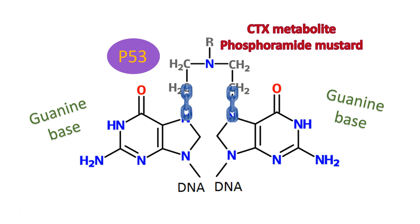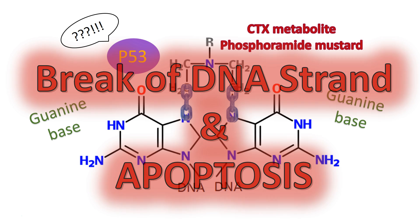Then along comes p53 — our tumor protein — which checks the DNA for transcription errors and anything that's not right. It will stop cellular reproduction, induce cell death, or induce DNA repair depending on what it finds. In this situation, it sees two guanine bases with the alkylating molecule bridging them via covalent bonds it can't break apart, and it essentially signals to kill the cell, resulting in a break in the DNA strand.